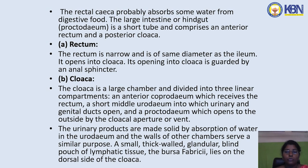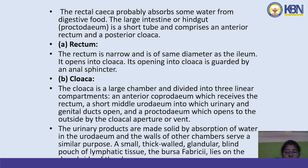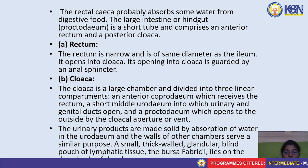The large intestine or hindgut is a short tube comprising an anterior rectum and a posterior cloaca. The rectum is narrow and of the same diameter as the ileum. It opens into the cloaca, guarded by the anal sphincter. The cloaca is a large chamber divided into three linear compartments: an anterior coprodeum which receives the rectum, a short middle urodeum into which urinary and genital ducts open, and a proctodeum which opens to the outside by the cloacal aperture.